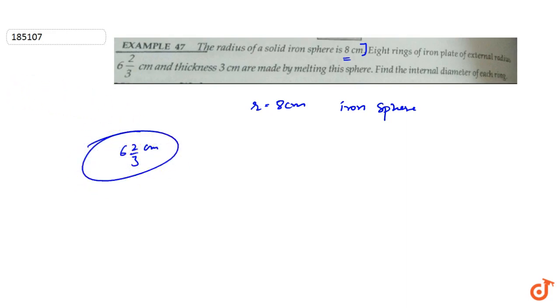We have a mixed expression given. External radius of eight rings, every ring has the same radius and thickness 3 centimeters. That means the ring has an external radius of 6 and 2/3 centimeters and its thickness is 3 centimeters.